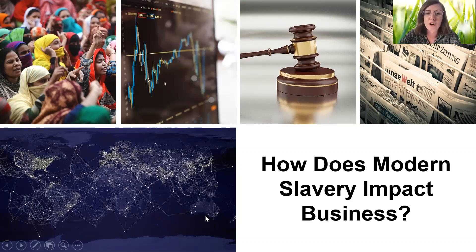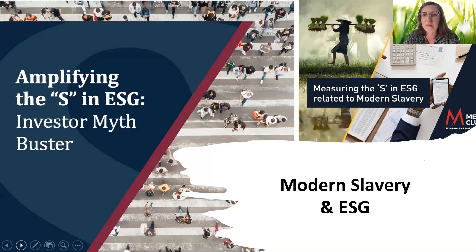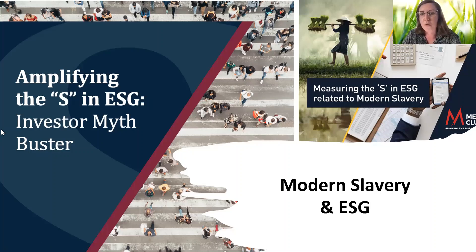A big part of this legislation is requiring companies to demonstrate their understanding of their own supply chains — committing to projects like the OAR, demonstrating transparency, and understanding where risk may lie within their supply chain. Finally, ESG is increasingly important: modern slavery is coming up more and more with investors looking to understand what companies are doing beyond their environmental footprint and governance issues through to what they're actually doing for society.